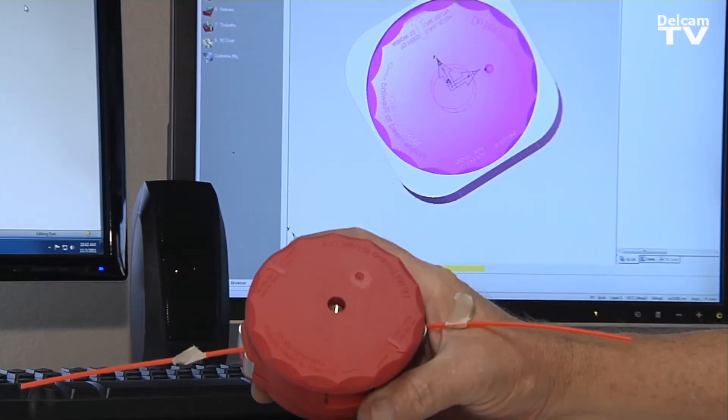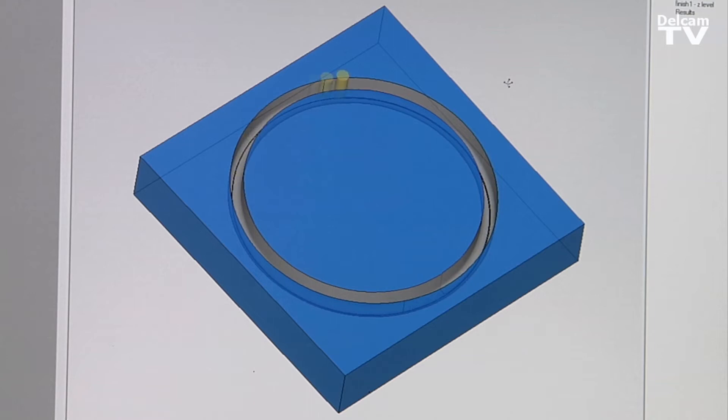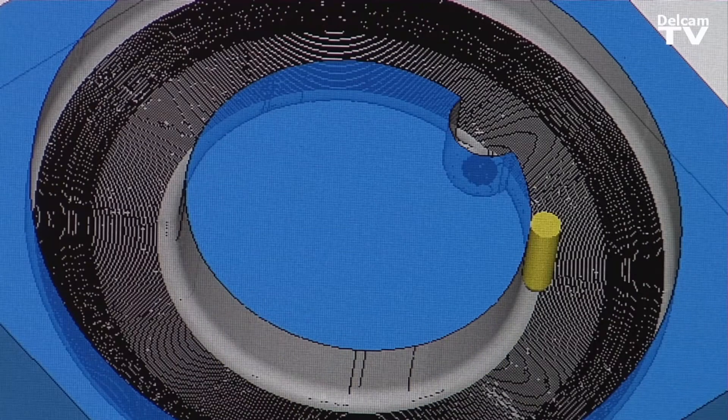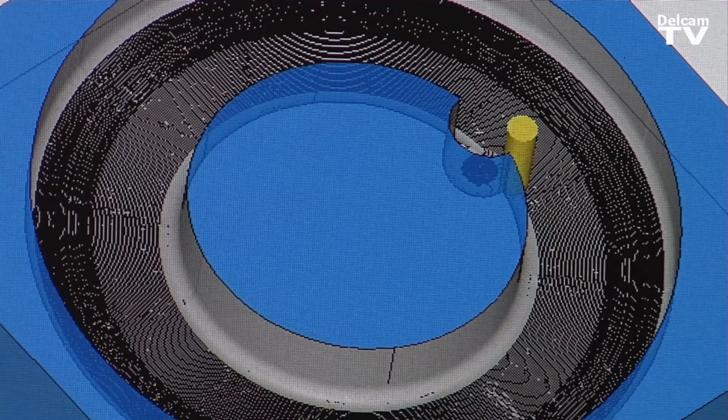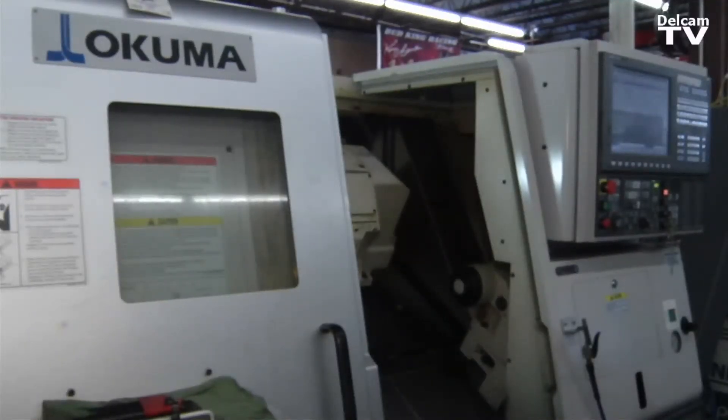I suggested that we take their Chinese mold and we redesign it, starting from scratch from the solid model, pulling it into FeatureCam, programming it, getting the program post-processed, and then we send it out to the machine tool. It's ready to rock and roll.